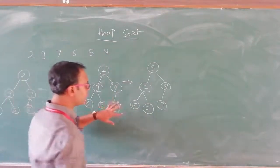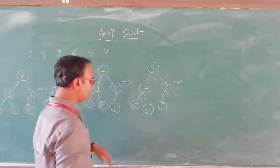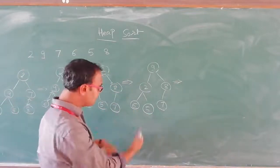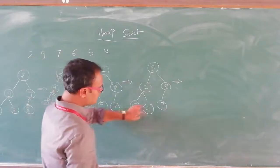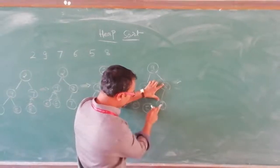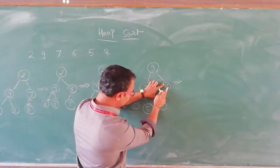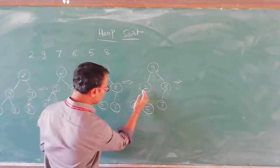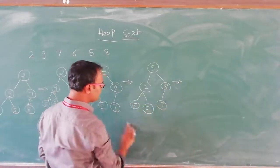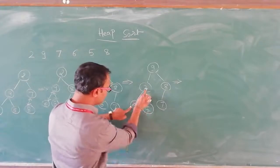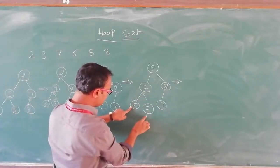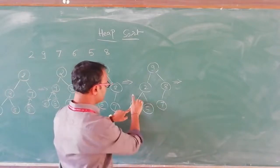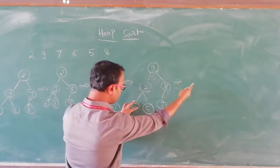We never stop here. We have to start from the last node to the root again, because if there are any changes in a previous iteration we have to account for them. For this node, only one child is there — 7 is compared with 8, 7 is smaller than 8, so there is no swapping. We come to the previous node. Since there are two children for 2, we first compare 6 and 5. 6 is bigger. The bigger node will be compared with its root.